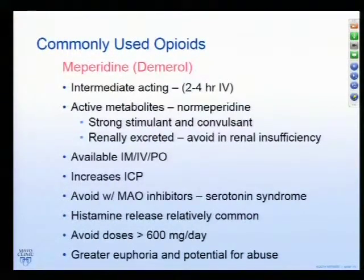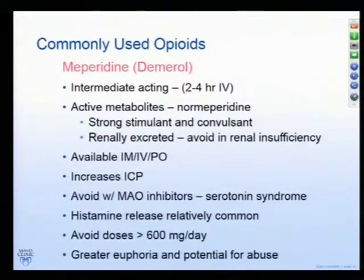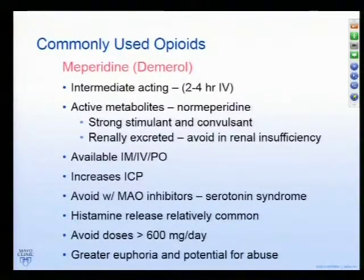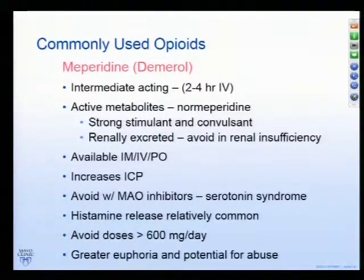Demerol or meperidine is an intermediate-acting opioid not really used for pain management anymore because it has active metabolites — some of which are proconvulsant — can increase ICP, has a host of drug-drug interactions, causes histamine release, and has quite a history of causing euphoria and abuse potential. My exposure to it now is primarily in the PACU for postoperative shivering, where it's still very good. If patients are on Demerol for pain, you really want to keep their dose less than 600 milligrams a day.